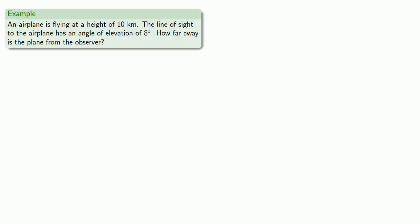For example, suppose you see an airplane flying at a height of 10 kilometers. The line of sight to the airplane has an angle of elevation of 8 degrees. How far away is the plane from the observer?